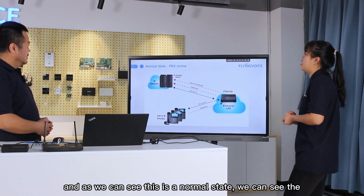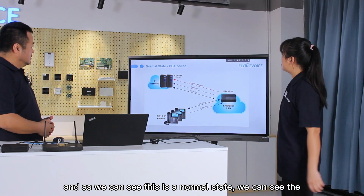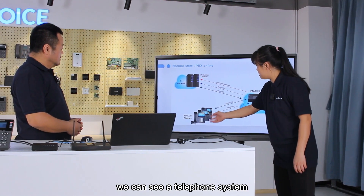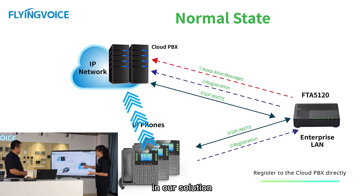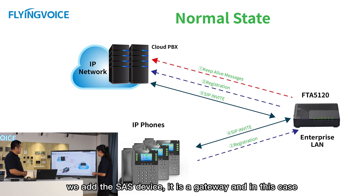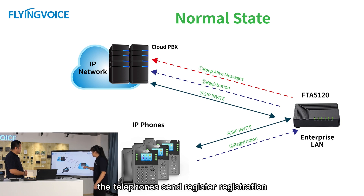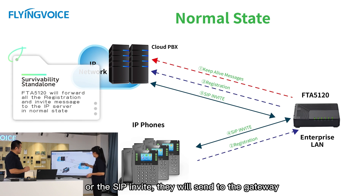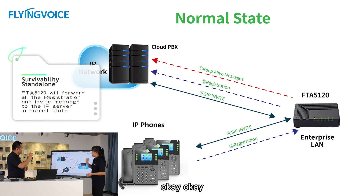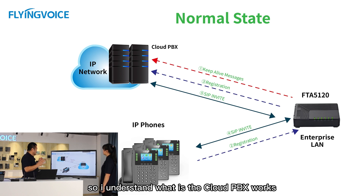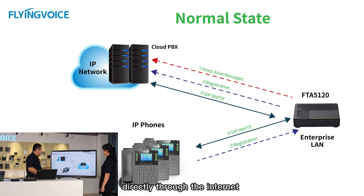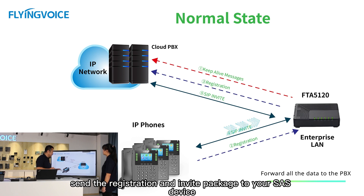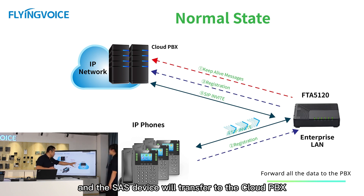This is a normal state topology. The telephone system at the bottom normally registers to the PBX server directly. In our solution, we add a SAS device — a gateway. The telephone's SIP registration and SIP INVITE messages are sent to the gateway, which then forwards them to the IP PBX server. So all IP phones send registration and INVITE packets to the SAS device, and the SAS device transfers them to the Cloud PBX.